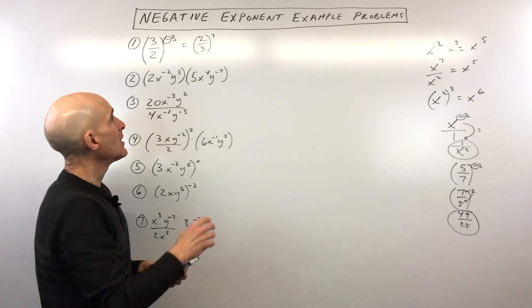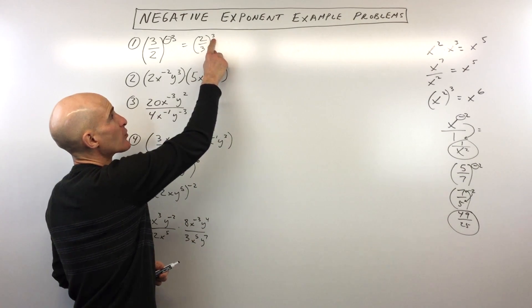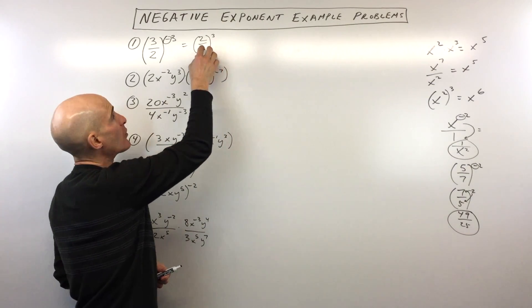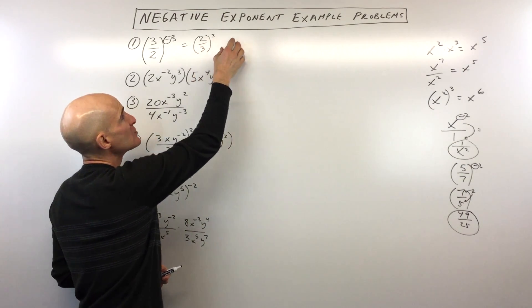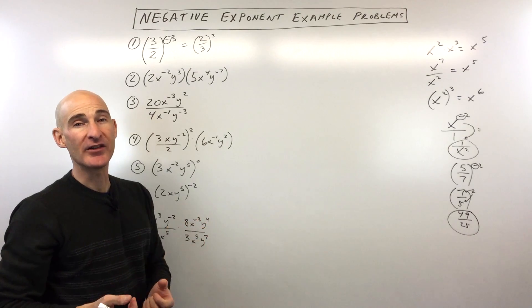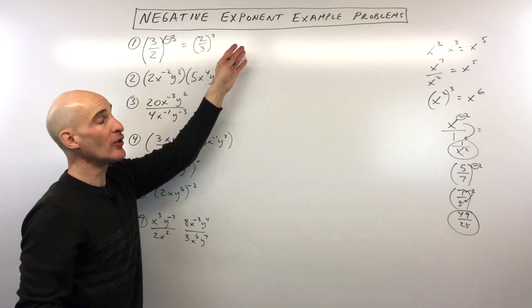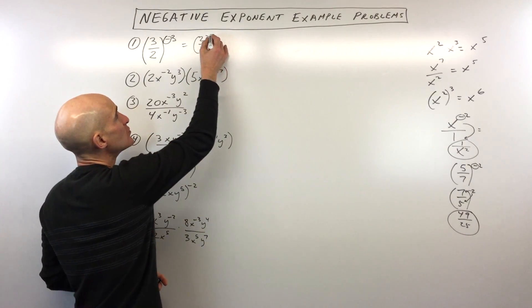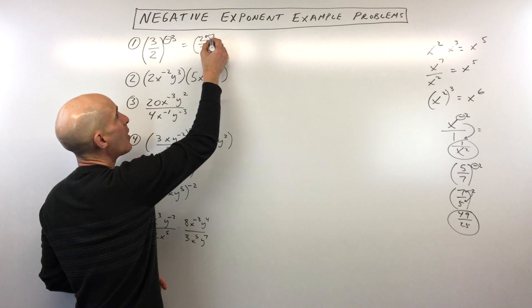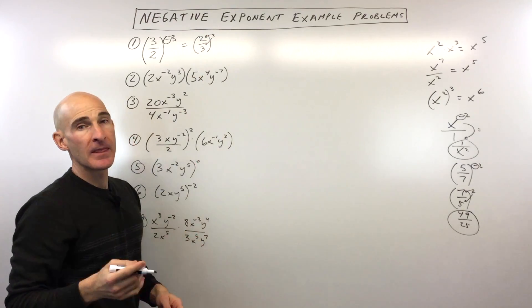Now remember, when you cube something or raise it to the third power, it means you have 1, 2, 3 of these all multiplied together. So if you get stuck, you can write it out like that. But the shortcut is you distribute that power to the numerator and the denominator.